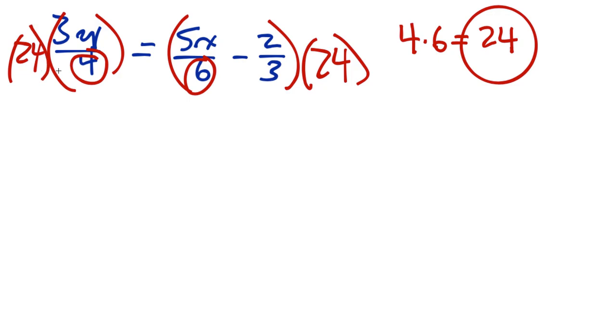On the left-hand side, that's going to work out to be 18y. On the right-hand side, 24 times 5x over 6 - the 24 and 6 cancel to 4, so it's 20x. And 2/3 of 24 is 16, so it's minus 16.